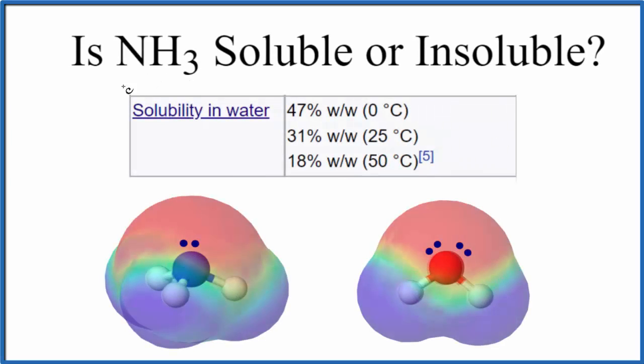We want to understand whether NH3 is soluble or insoluble in water. NH3, that's ammonia. If we look at some data here on solubility, we can see that ammonia NH3 is very soluble in water.